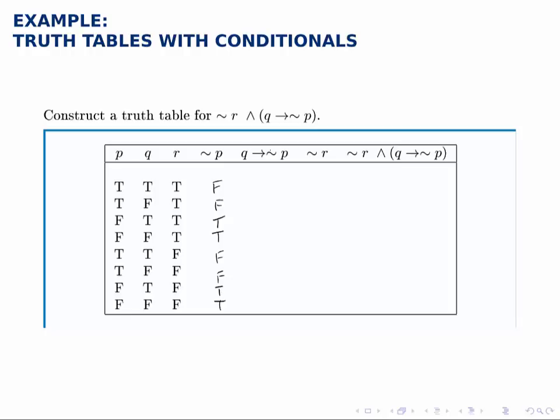Then for q implies not p, we have to remember the rule for the implication. It's only going to be false if q is true and not p is false. So we look through that and see when does that happen. It happens in the first row, so it's false there. But then the second row, it doesn't happen, so it's true, true, true.